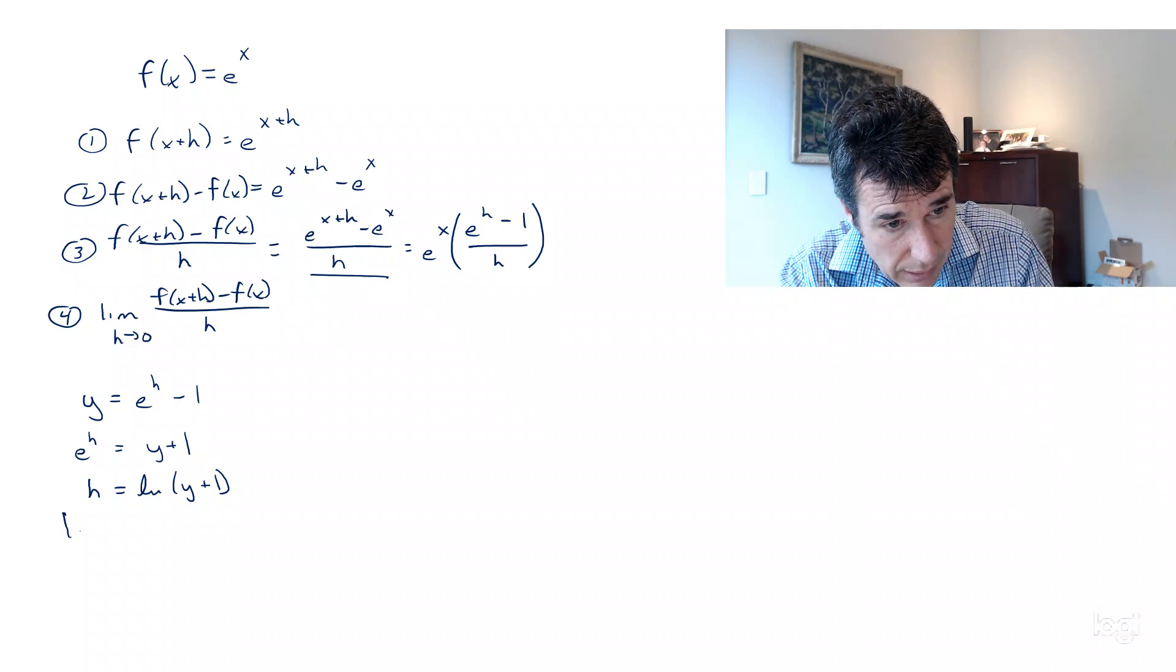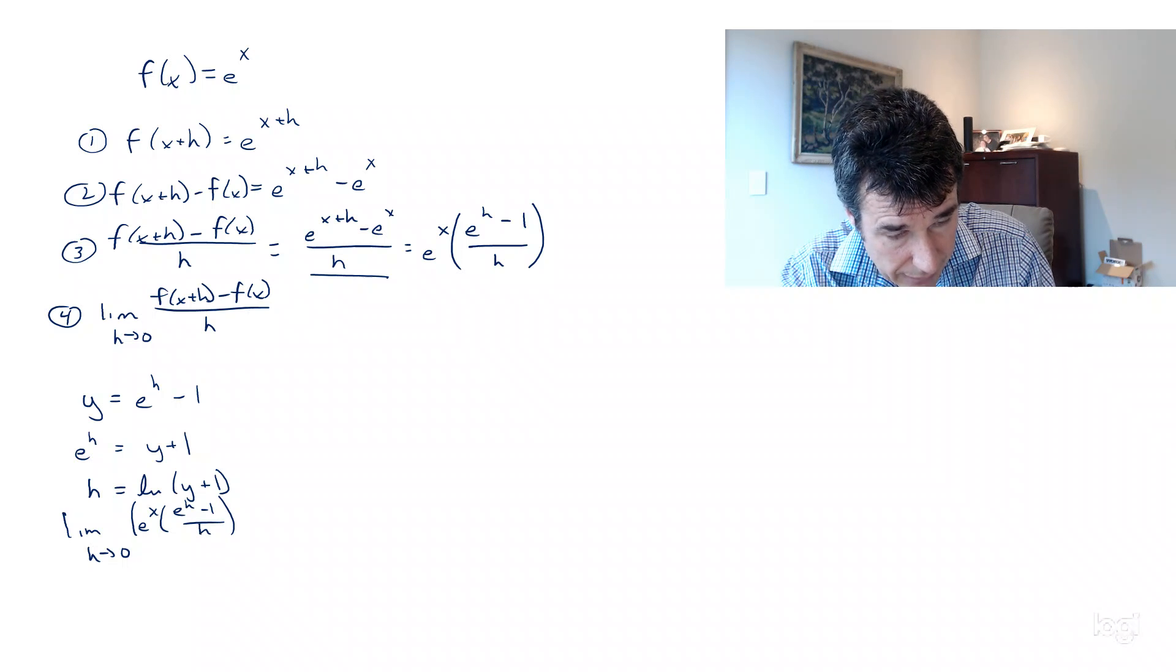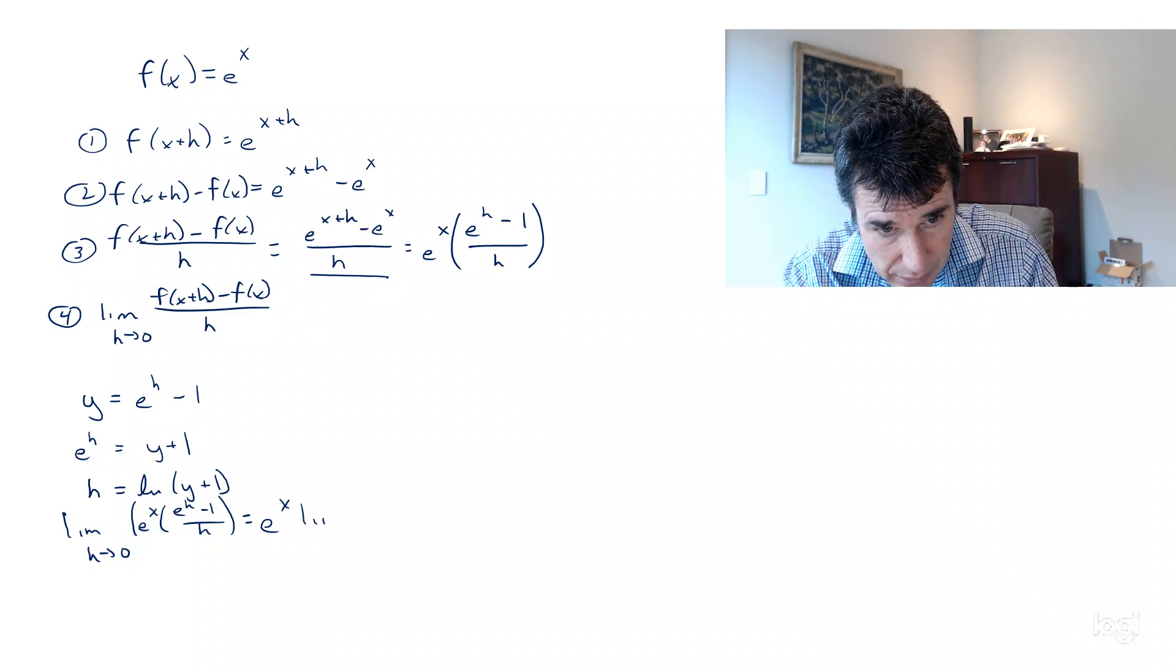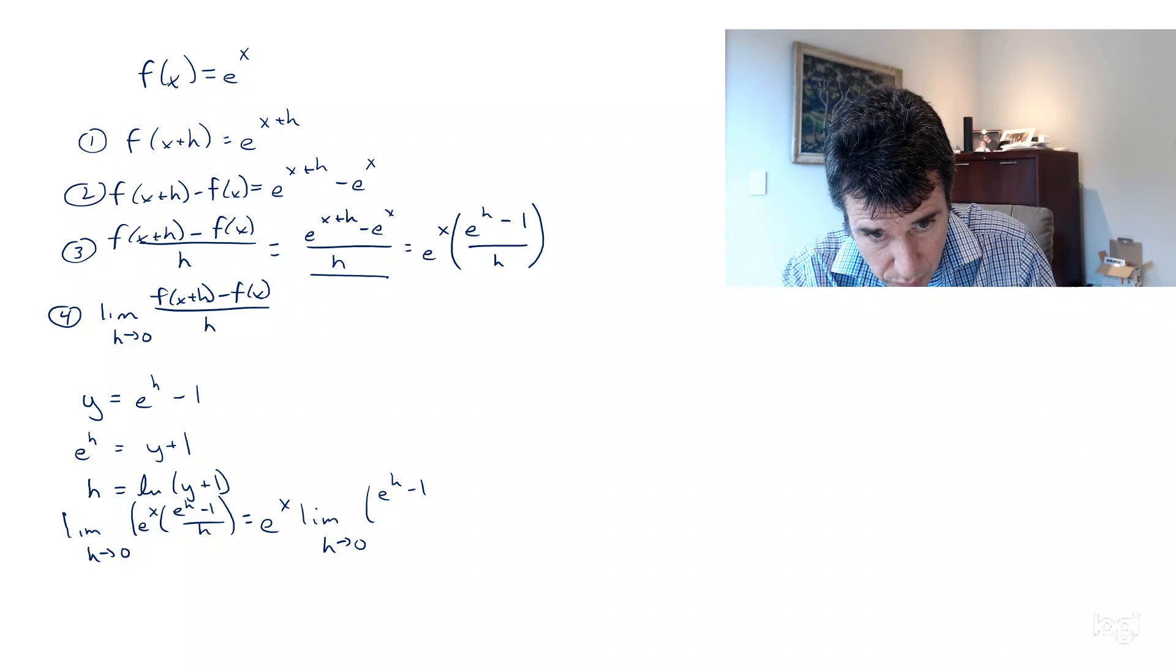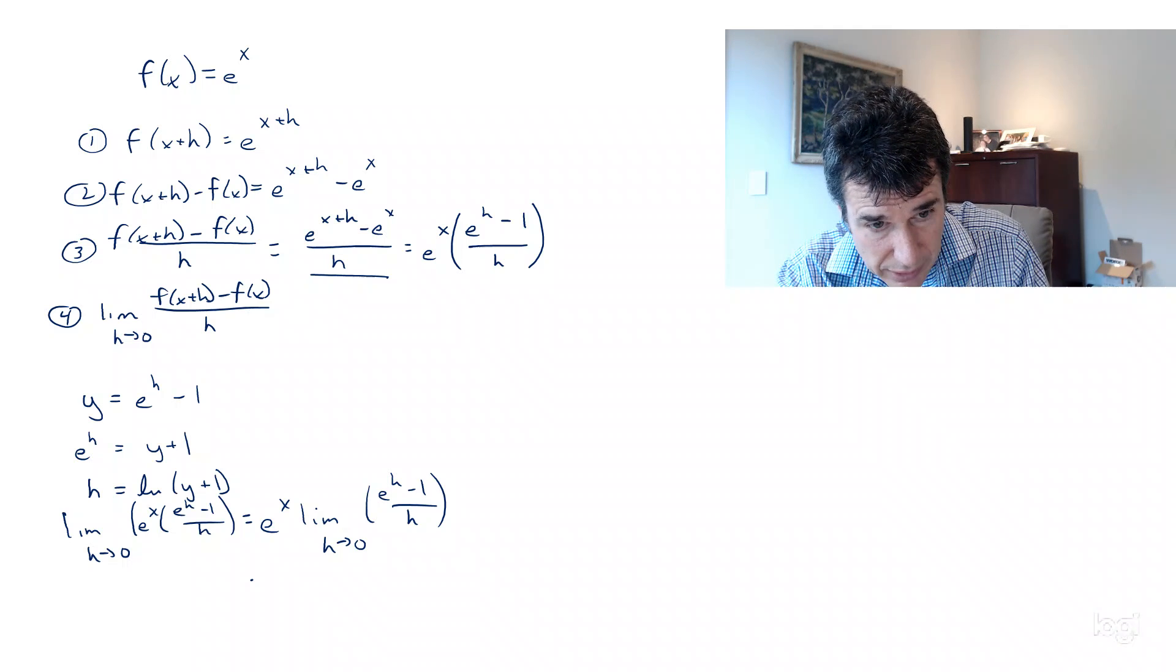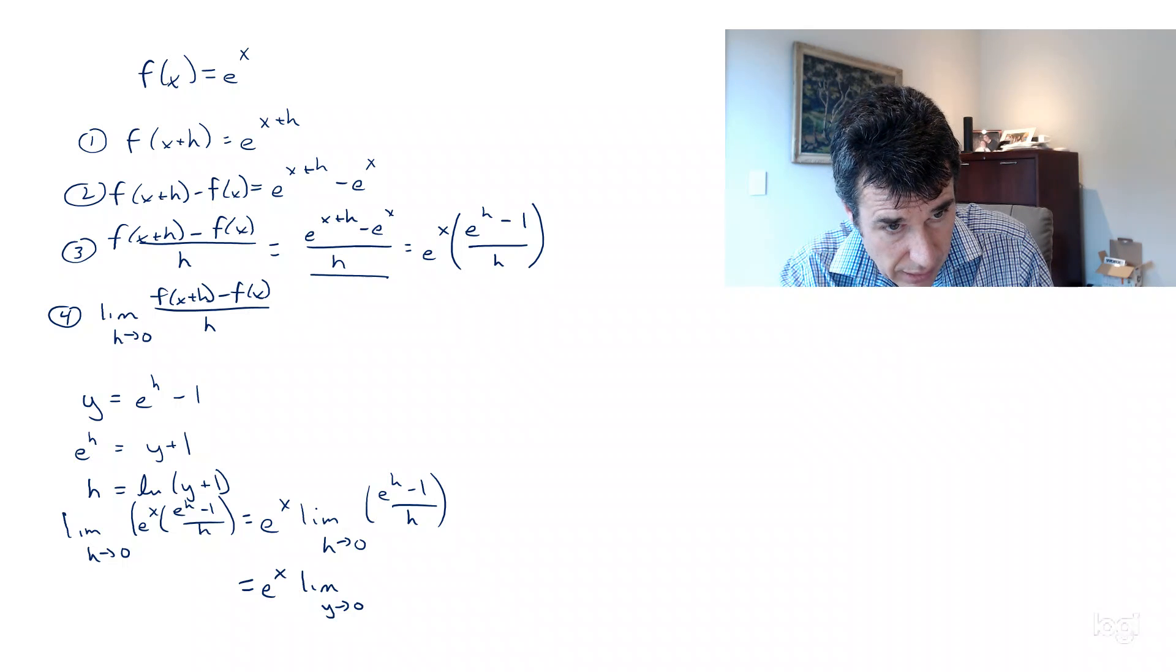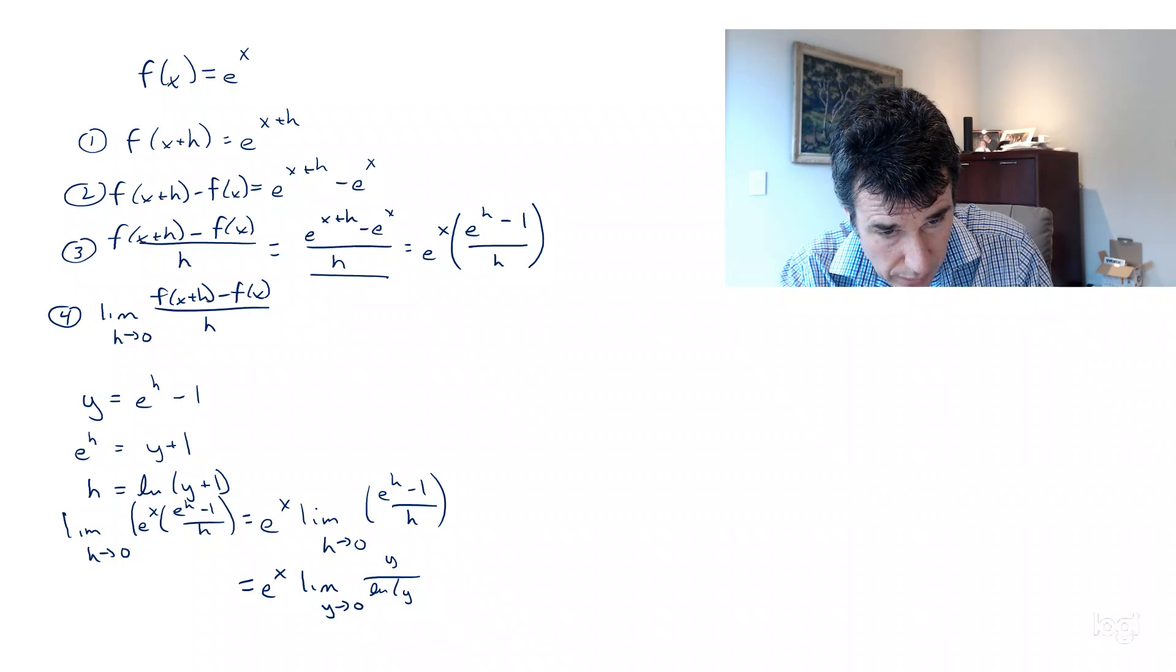So we can rewrite and look at our limit as h → 0 of e^x times (e^h - 1)/h. Well, e^x is just a constant in this case because we're changing h. So this is e^x times lim(h→0) of (e^h - 1)/h, which is going to be the same as e^x times lim(y→0) of y/ln(y + 1).